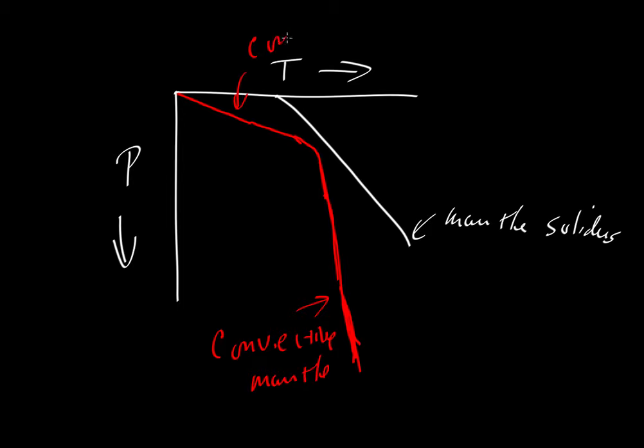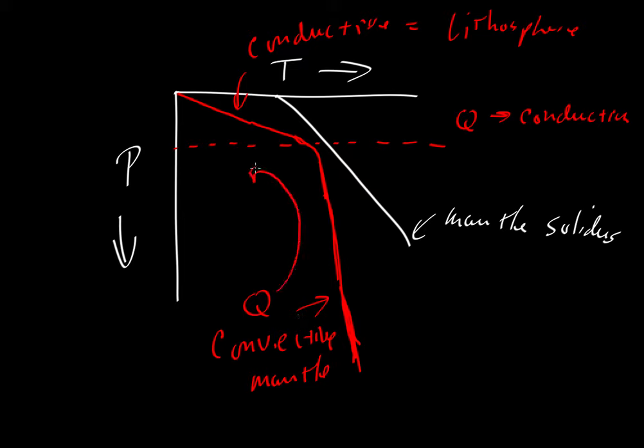And then up here, we have the conductive lid. So the conductive lid would otherwise be known as the thermal lithosphere. So the thermal lithosphere is that part of the lithosphere, or that part of the Earth, that conducts heat. So Q, heat, is being transferred by conduction, whereas over here, down here in the convective mantle, heat is being transferred by convective flow.